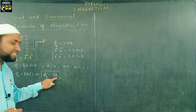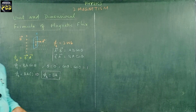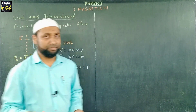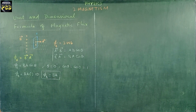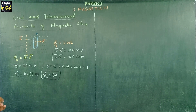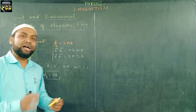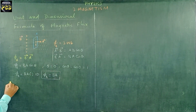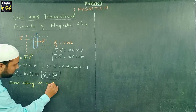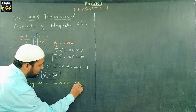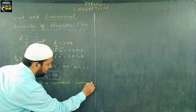We know A is area. Area is nothing but the product of length and breadth. To find the magnetic field B, I use the expression for force acting on a current-carrying conductor placed in a uniform magnetic field.